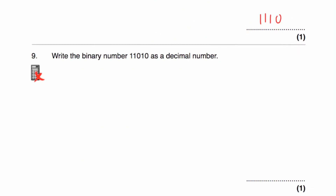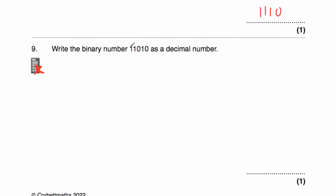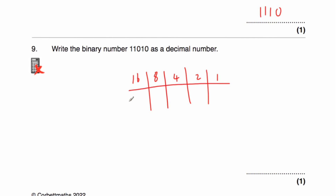Question nine: write the binary number 11010 as a decimal number. We need columns: 1, 2, 4, 8, 16 — that's five columns, and our number has five digits. Putting our numbers in: 1, 1, 0, 1, 0. So we add 16, 8, and 2: 16 plus 8 is 24, plus 2 equals 26. The binary number 11010 as a decimal number is 26.